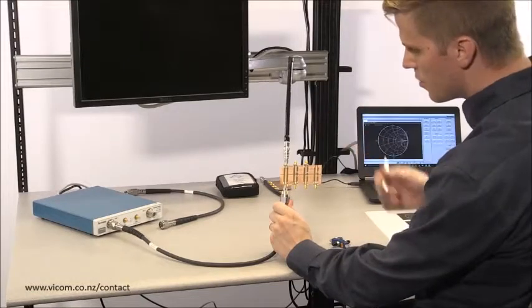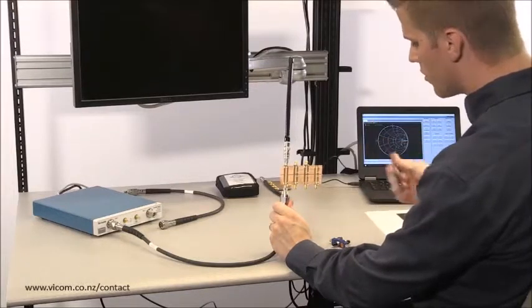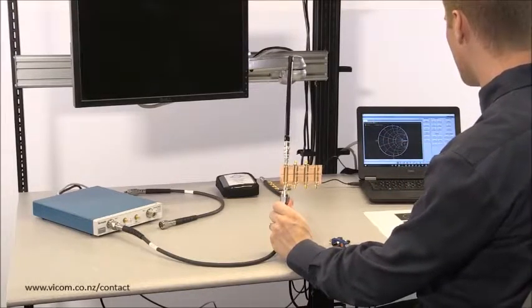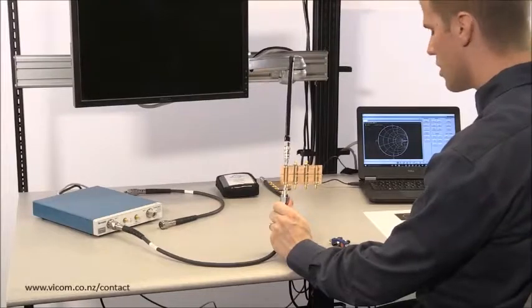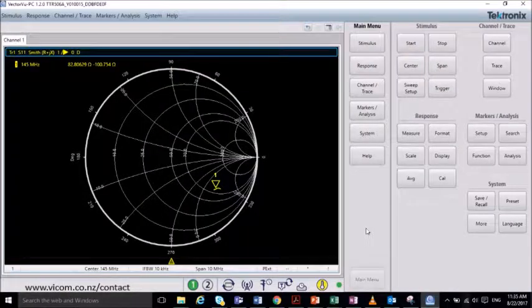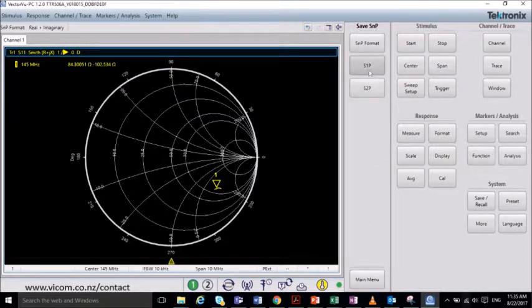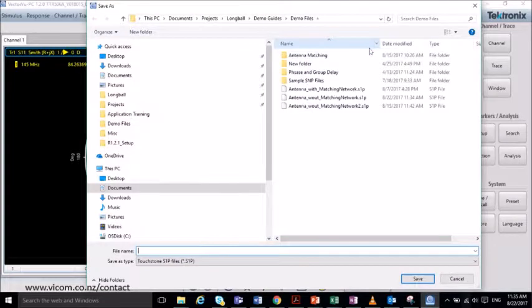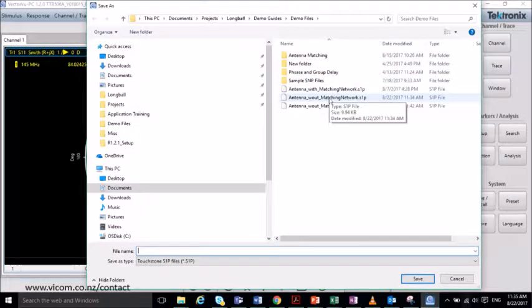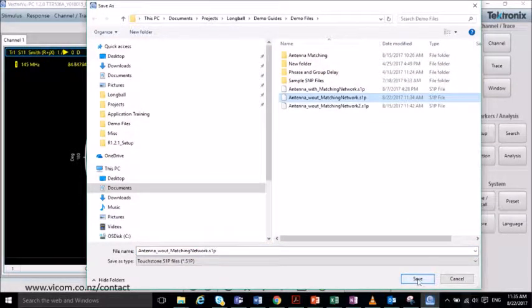So, now that we're measuring the impedance of the antenna, including the feed line, let's go ahead and save the S-parameter file so that we can export it to our simulation software. So, to save the S-parameter file, go to Save, Save SNP, Save the S1P on port 1, and then I'll overwrite a file that I created recently. And this will be the unmatched case.